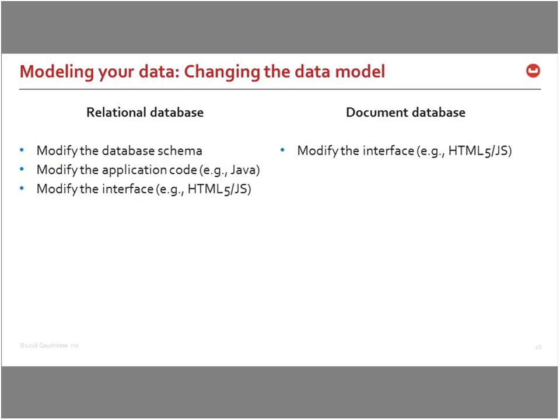Consider schema evolution: if you want to start tracking Twitter handles in user profiles, in the relational world you must do an ALTER TABLE ADD COLUMN, change the application service to accept the new field, and change the API and web form. In the NoSQL world, you just change the web form — pass a new JSON document structure directly to the database. No database-side changes needed; you simply start sending a JSON object with different fields.